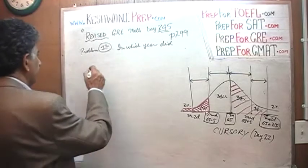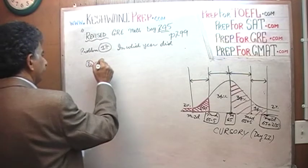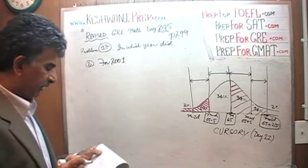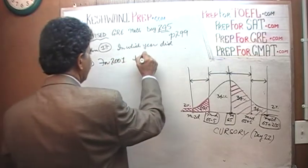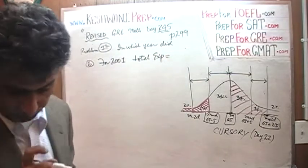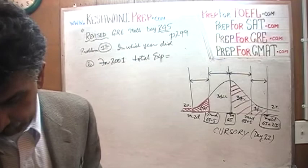So for 2001, let's find out what the total expenditure is. In 2001, the total expenditure is, if you look at the graph carefully, in 2001, you will see that it is 160.